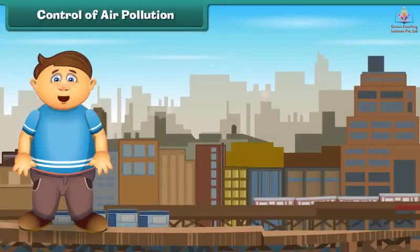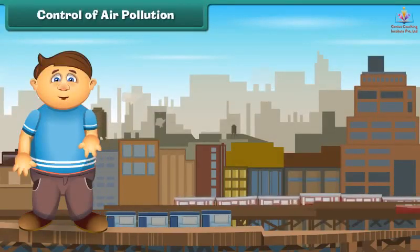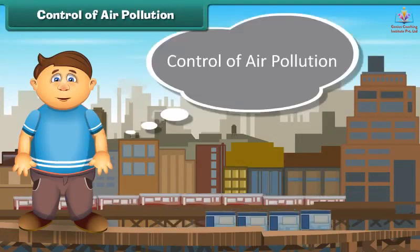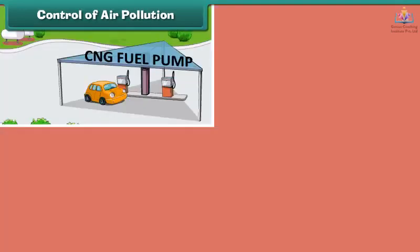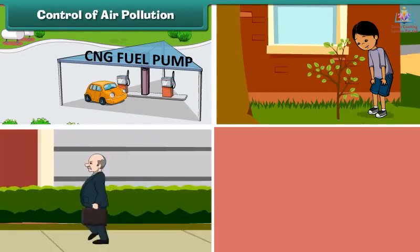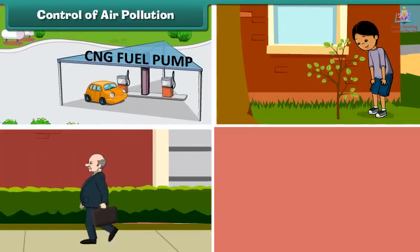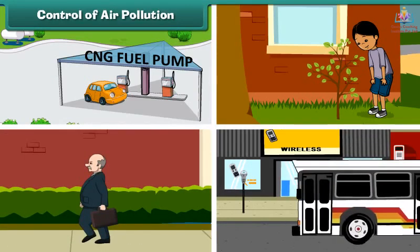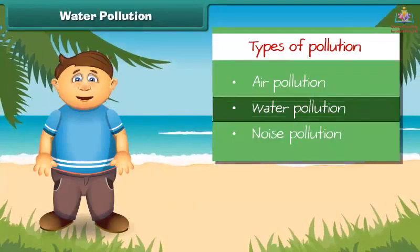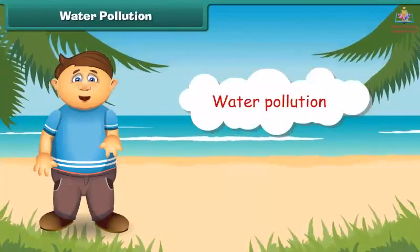Now the question is, how can we control air pollution? There are many things we can do. It can be controlled by using clean fuels like CNG in vehicles and industries, planting new young plants, preferring walking over driving, and using public transport for transportation.